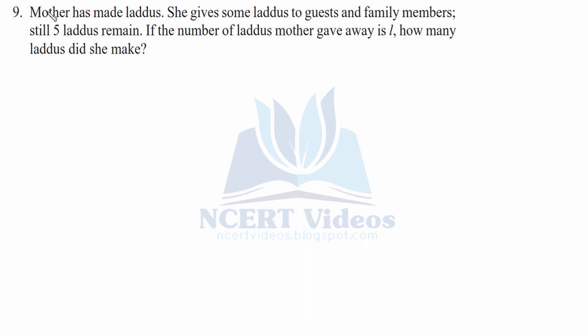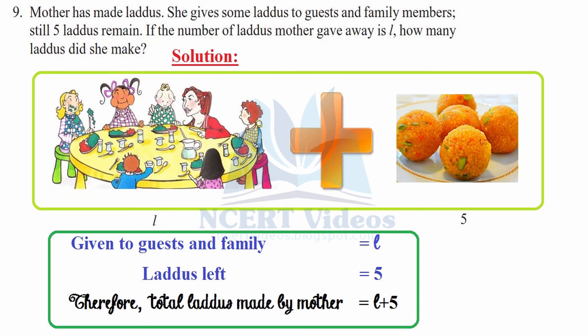Question 9: Mother has made laddus. She gives some laddus to guests and family members. Still, 5 laddus remain. If the number of laddus mother gave away is L, how many laddus did she make? This is a very easy question. Suppose this is a family and mother distributed L laddus to them. Now, still 5 of them remain - you can count them, these are 5 laddus. So the question asks, how many laddus did mother make? It would be simply L plus 5. So given to guests and family is L, and laddus left were 5. The total laddus made by mother were L plus 5. You just have to add them.